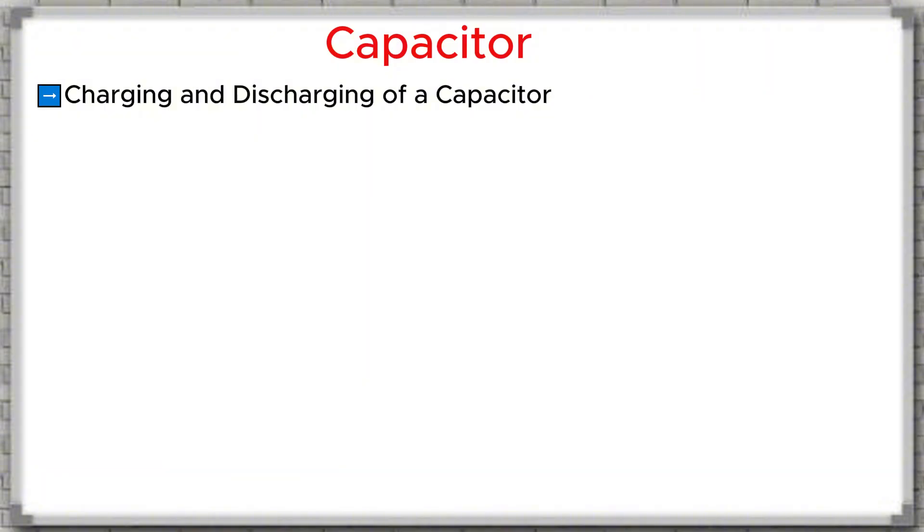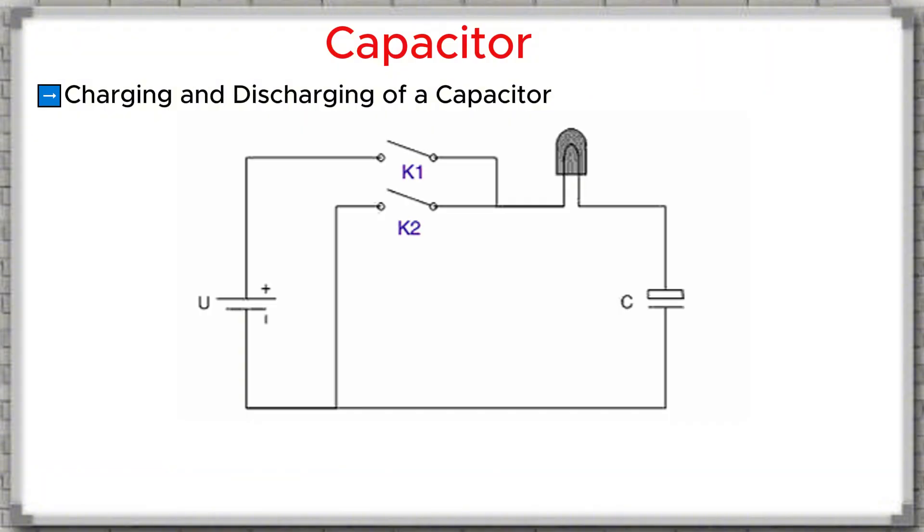Now let's take a closer look at a very important property of a capacitor - that is, its ability to charge and discharge. Thanks to this property, a capacitor can conduct alternating current. Charging process: As we can see in the illustration, when switch K1 is closed, electric current from the power source U flows through the light bulb and charges the capacitor. This current is called the charging current. While charging, the bulb lights up briefly. When the capacitor is fully charged, the charging current gradually drops to zero and the light bulb turns off.